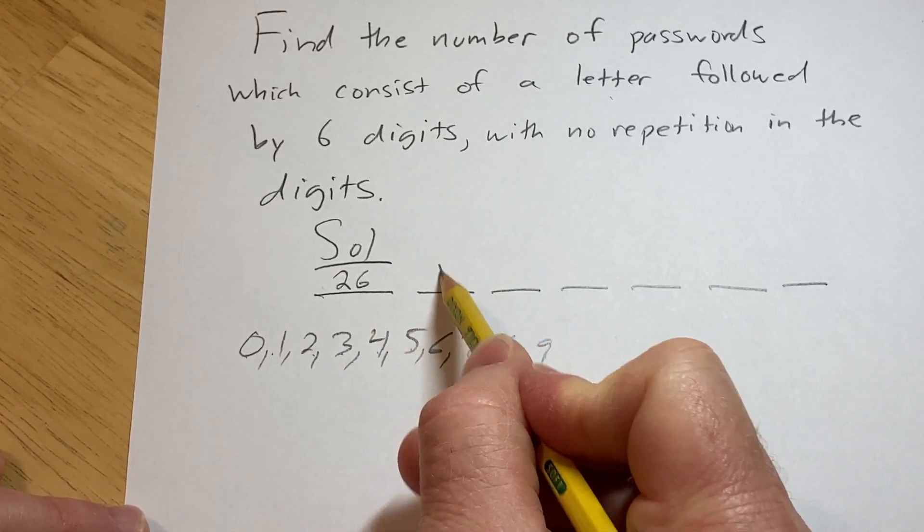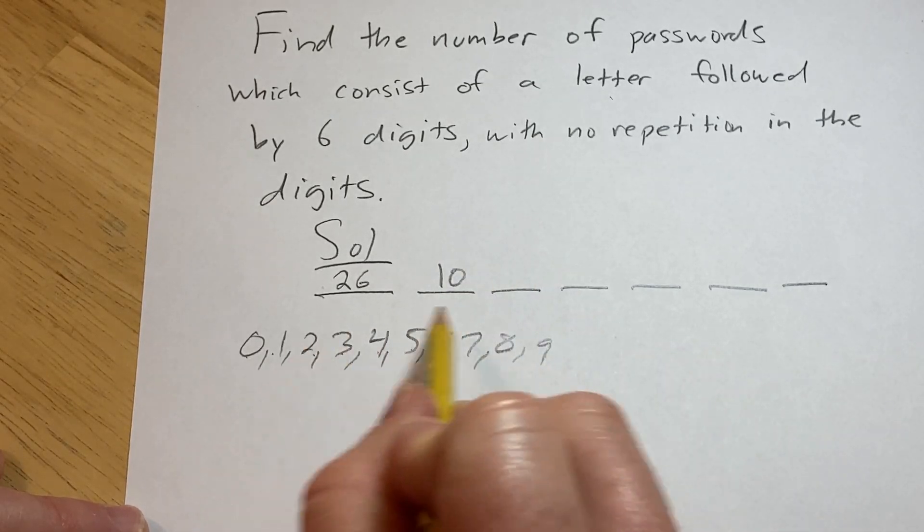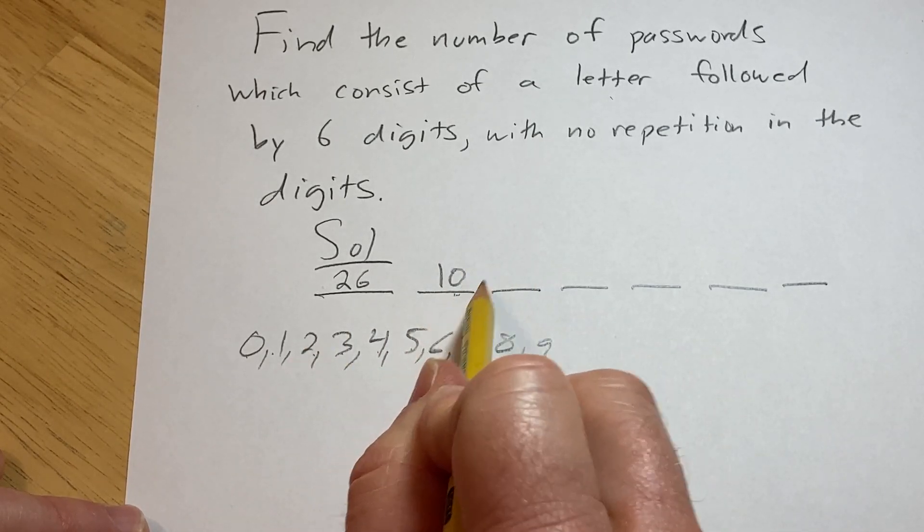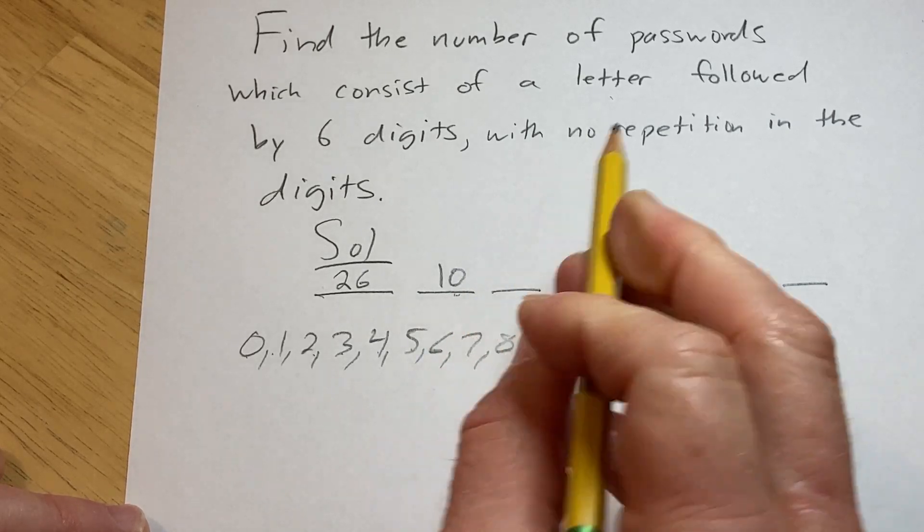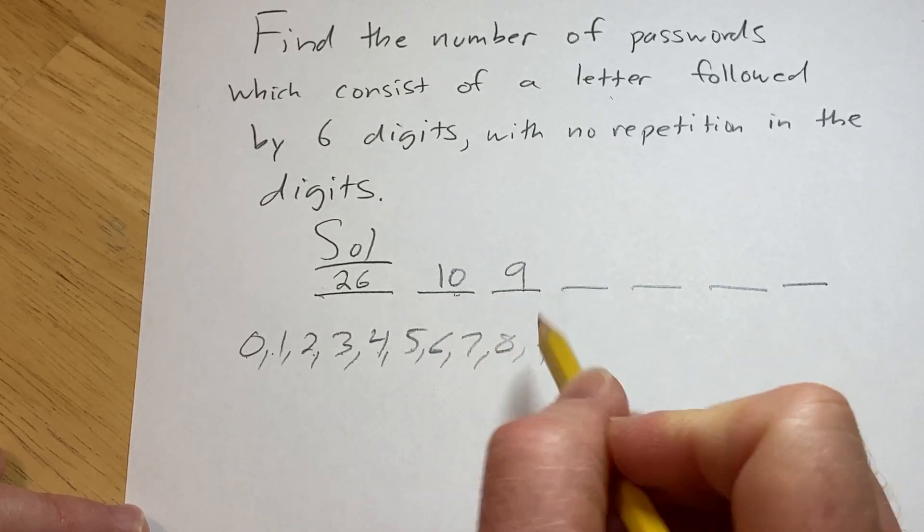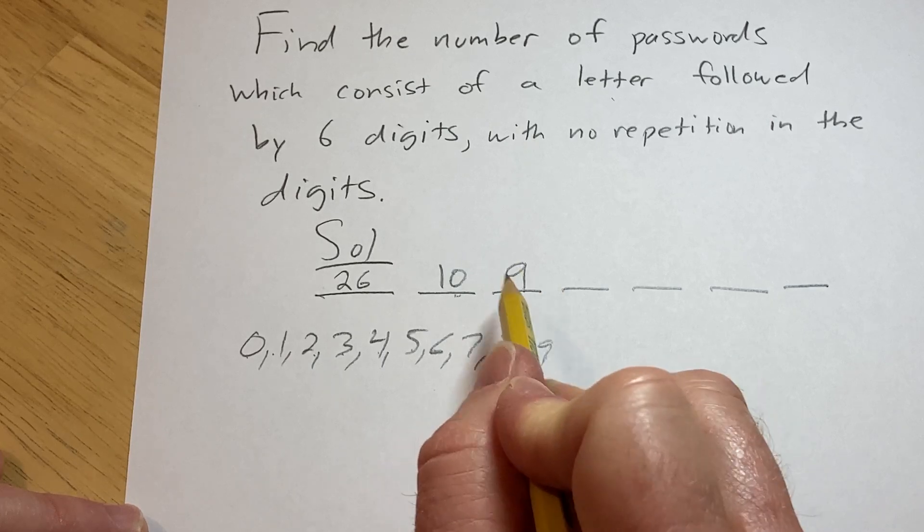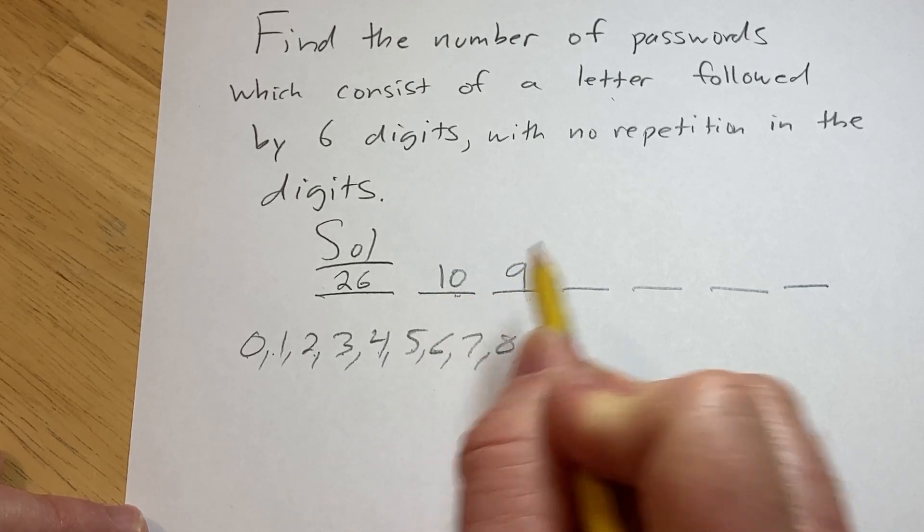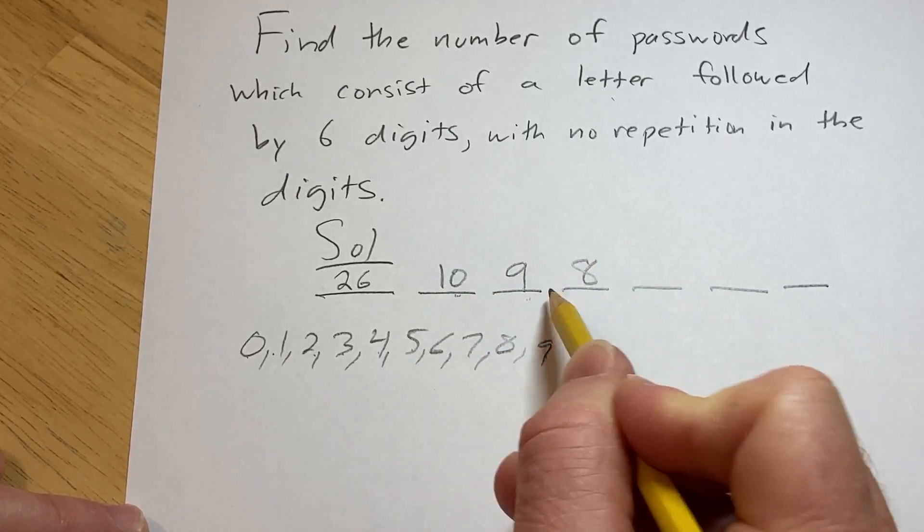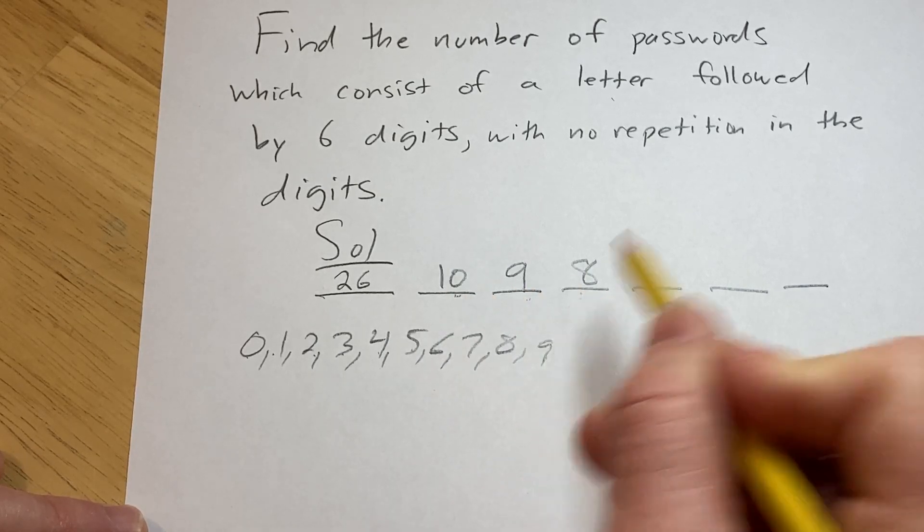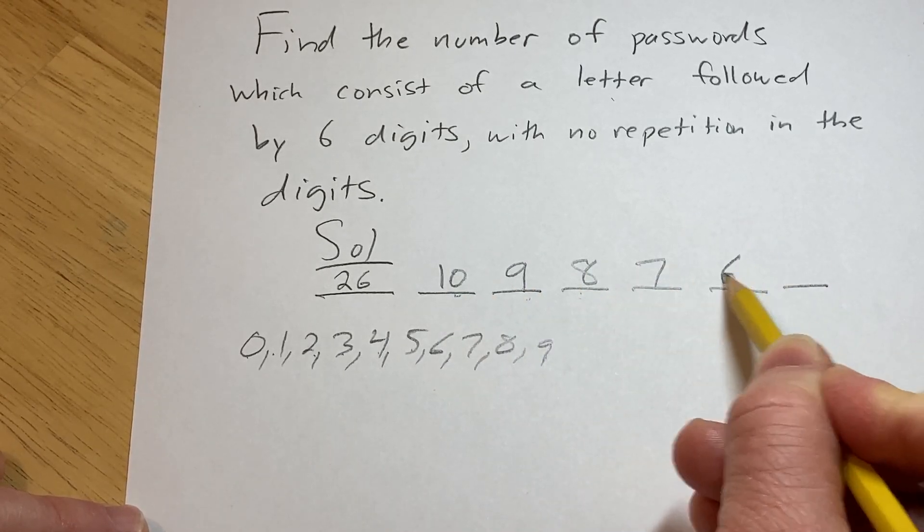So there are 10 choices for the second digit. Once you choose this digit though, you can't repeat it. So you have nine choices left. So there are nine ways to choose this one. And once you choose this one, well, you've already chosen two. So there's eight choices left. And then once you've chosen these three, well, you only have seven choices, likewise six and then five.